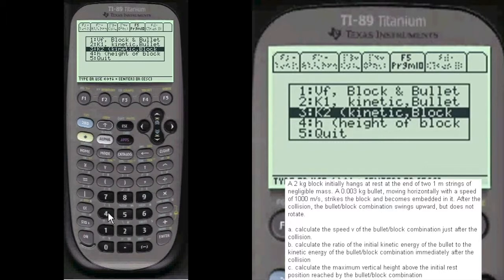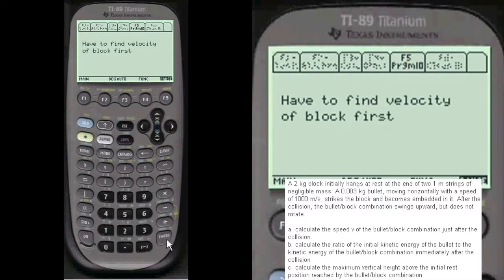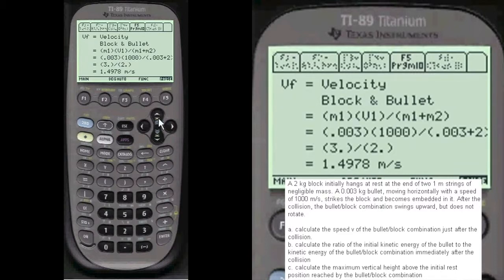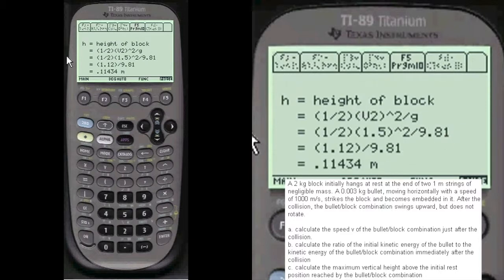And the height. How to find velocity. We have to find the velocity first to find the height. Find the velocity with this formula. And then the height is 0.11434 meters. Pretty neat, huh?